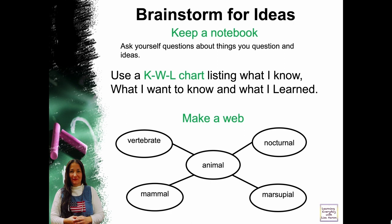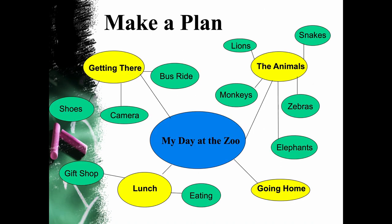Keep a notebook. Ask yourself questions about things you wonder about. Use a KWL chart listing what I know, what I want to know, and what I learned. Make a web — here's one about animals: are they vertebrates, nocturnal, a mammal, a marsupial? This is a web for creating a whole paper, not just a paragraph.